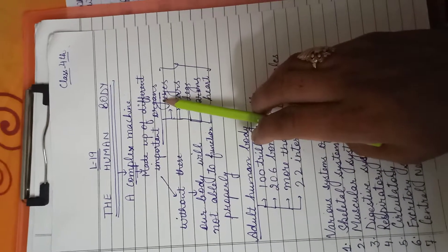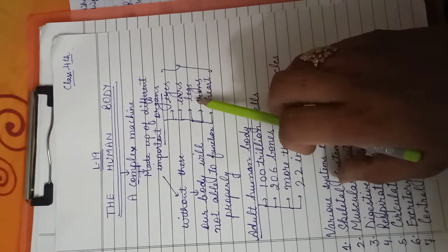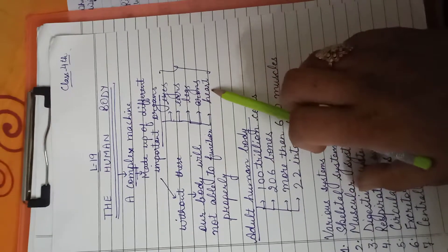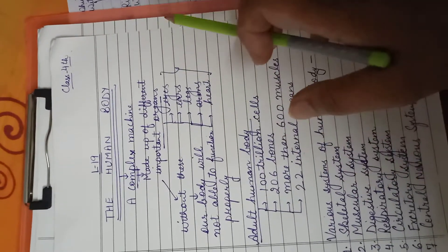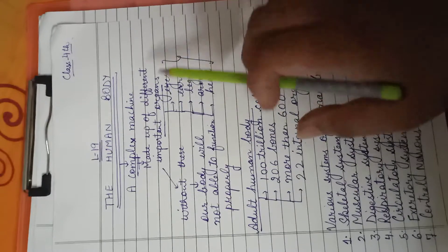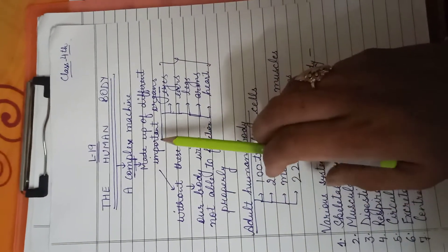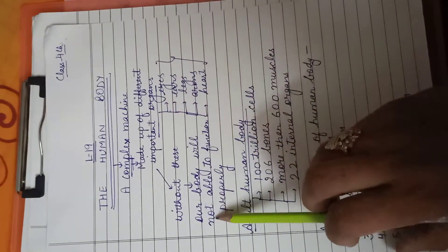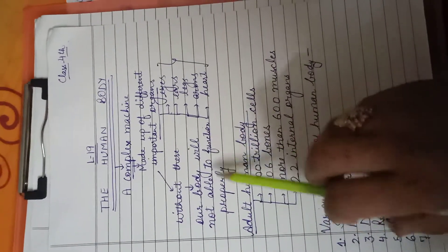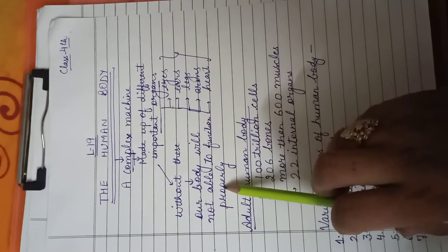These important organs are like eyes, ears, legs, arms, heart, liver, lungs and so on. And without these important organs, our body will not be able to function properly. Is it clear to all?